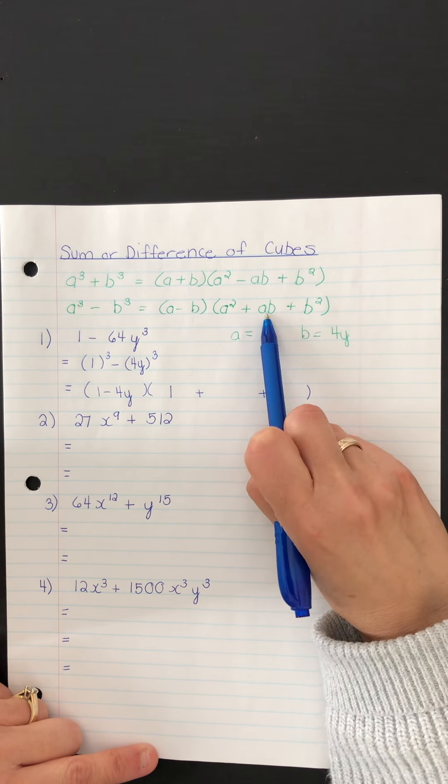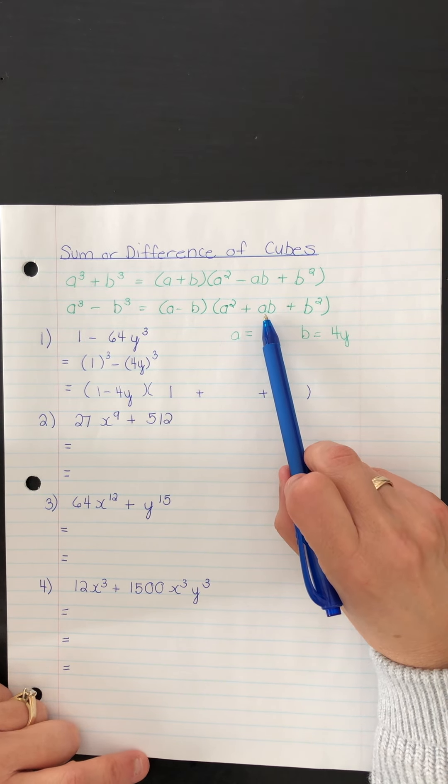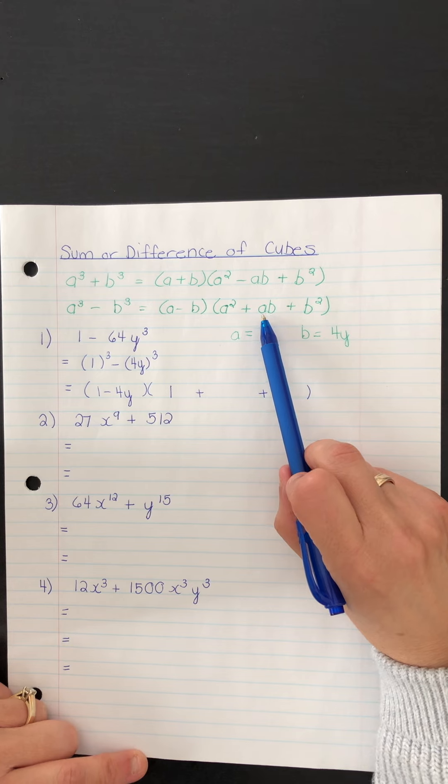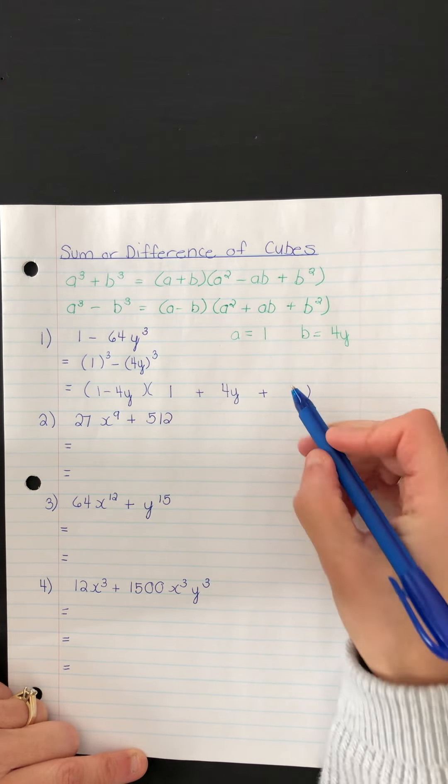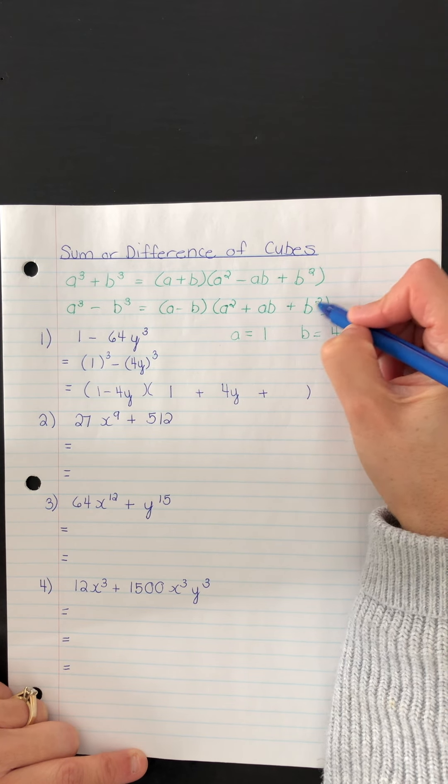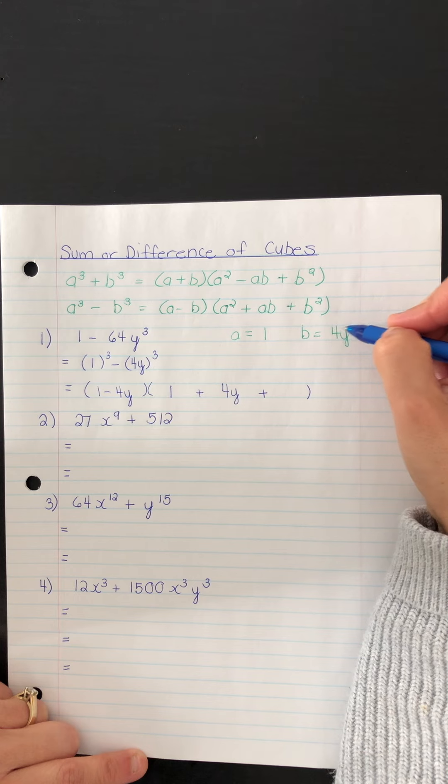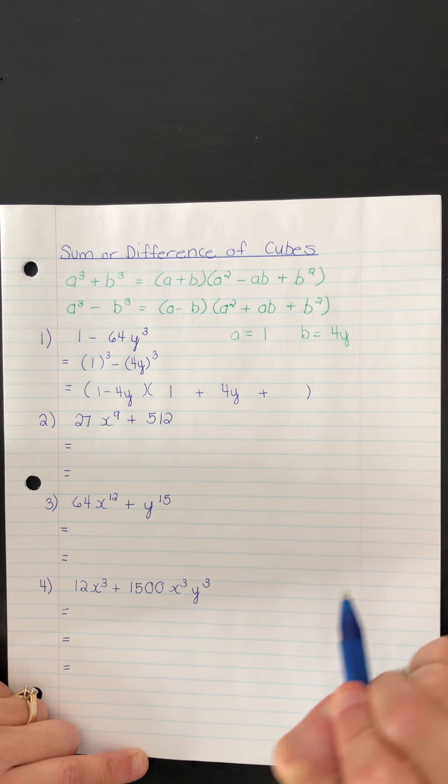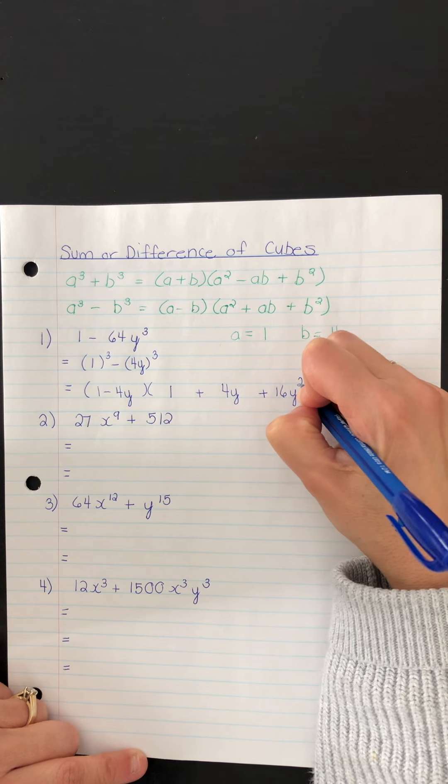In the middle spot, we should have a times b. That's what ab represents - a multiplied by b. So 1 multiplied by 4y. And in this last spot, we should have the square of b. When you square b, you have to square the number 4 and you also have to square y. So this becomes 16y squared. Just like that.